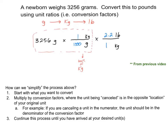Looking at the example from the last video, we converted 3,256 grams into an equivalent number of pounds. We started with grams and multiplied by the conversion factor — the unit ratio of 1 over 1,000, which simplifies to the number of kilograms per gram. Multiplying those gives us the number of kilograms. Then we multiply by 2.2 over 1, because there are 2.2 pounds per 1 kilogram, resulting in a conversion into pounds. We were really focusing on each conversion factor and why the unit ratio — the amount of one unit per something else — made sense.